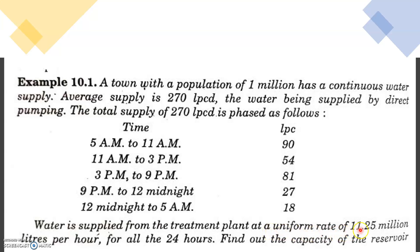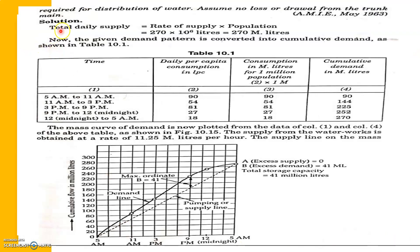The water is supplied from the treatment plant at a uniform rate of 11.25 million liters per hour for all 24 hours. What we need to find is the capacity of the reservoir required for distribution of water, assuming no loss or withdrawal from the trunk main. So we need to find the capacity of the distribution reservoir.